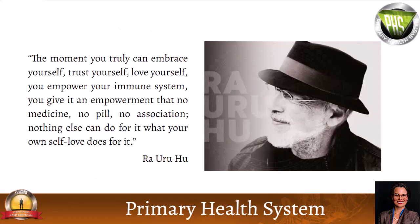One of the things that Ra says is that with the primary health system, especially, it's most important thing is that you don't want to force or push or do anything that your body isn't ready for. This is about accepting your body and your process. Your body will scream louder and louder if you are not operating in alignment. It screams to you with pain, illness, dis-ease that turns into disease. Ra says about self-love, that was really one of his messages, is that the moment you can truly embrace yourself, trust yourself, love yourself, you empower your immune system. You give it an empowerment that no medicine, no pill, no association, nothing else can do for it what your own self-love does for it.